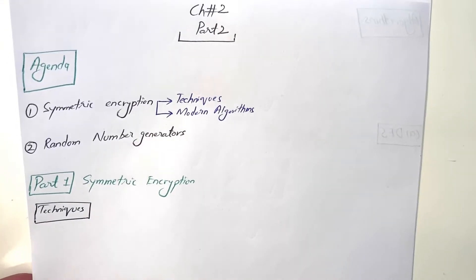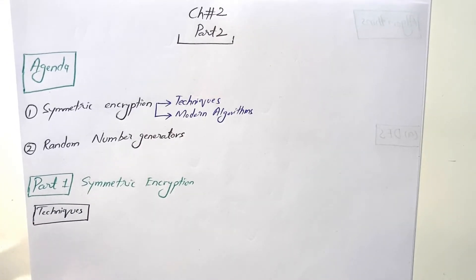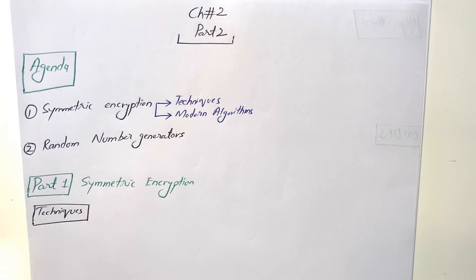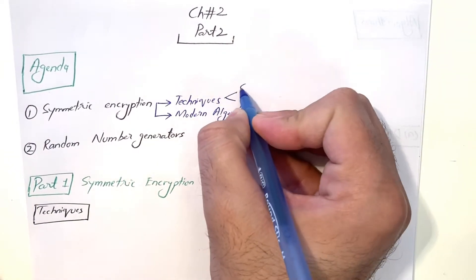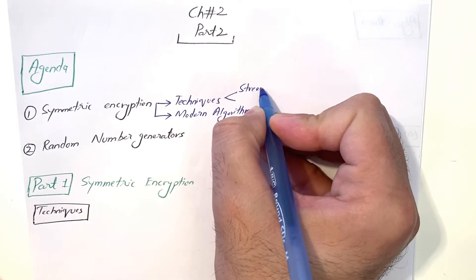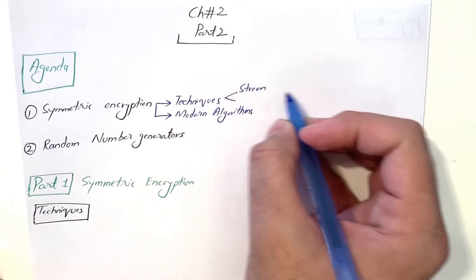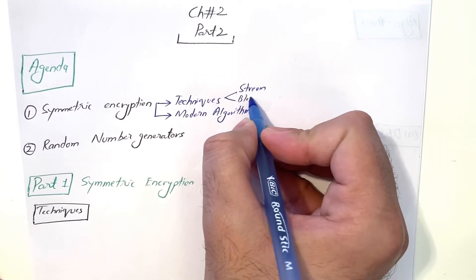Hello everyone. Today we will discuss chapter number two, part two — the last part of chapter two. In part one, we discussed the definition of cryptography, types of cryptography, and conventional symmetric encryption schemes. Today we're going to talk about techniques of symmetric encryption. Specifically, I'll give you an overview of stream cipher and block cipher.